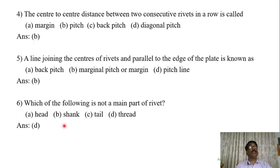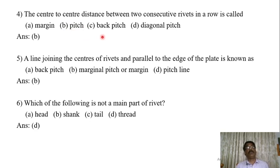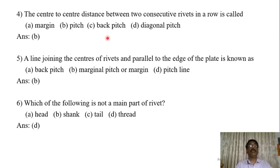The fourth question: the center-to-center distance between two consecutive rivets in a row is called — margin pitch, back pitch, or diagonal pitch? The answer is pitch. Pitch is the distance from the center of one rivet to the center of another rivet in the same row.